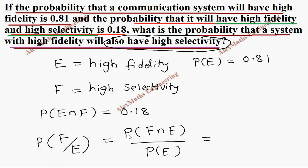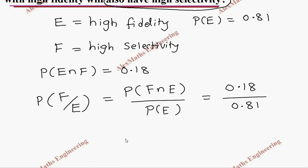E intersection F or F intersection E, both are same, which is given in the question as 0.18, and P of E is 0.81. Now we can move two decimal places so it is 18 by 81, we can cancel using the 9 table, which is 2 by 9.